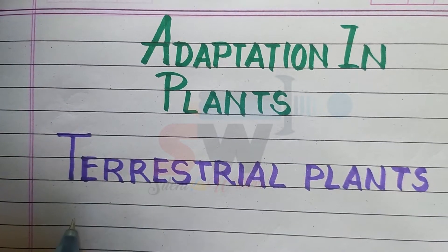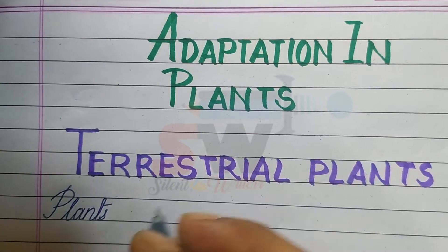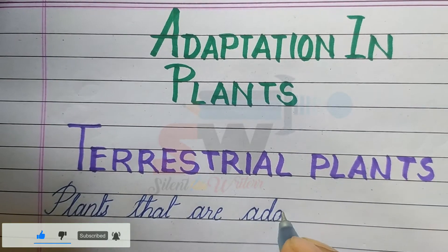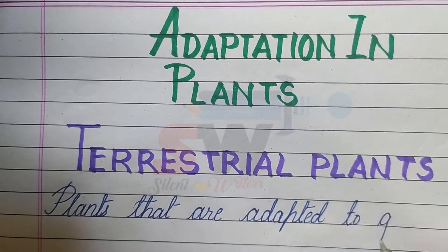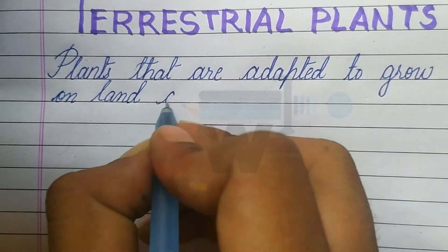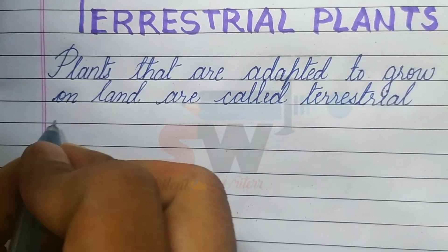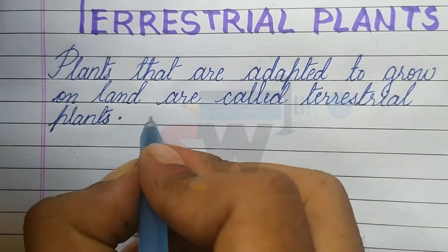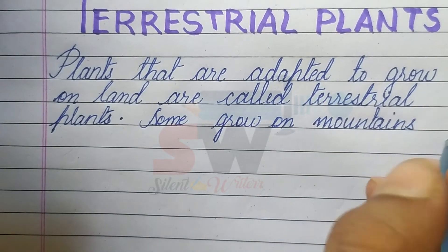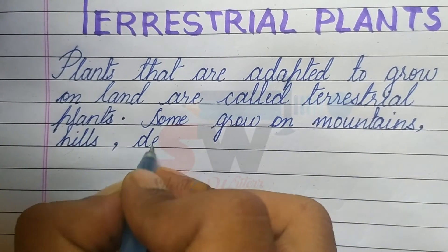Adaptation in Plants: Terrestrial Plants. Plants that are adapted to grow on land are called Terrestrial Plants. Some grow on Mountains, Hills, and Deserts.